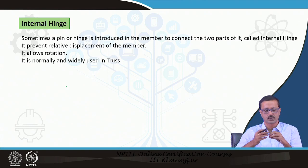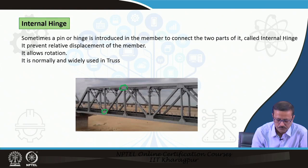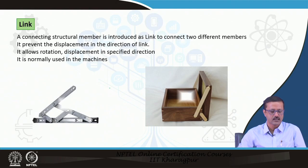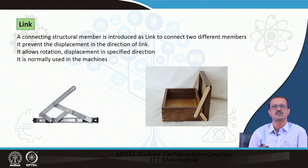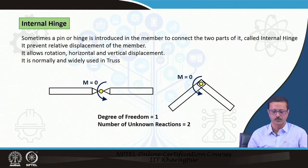Internal hinges are also used in parts of machines and in trusses. In an internal hinge or link, the moment is equal to 0 and the degree of freedom is 1. Such a link or hinge cannot take any kind of moment. The degree of freedom equals 0 for the link itself and the number of unknowns is 2, covering both horizontal and vertical reactions.